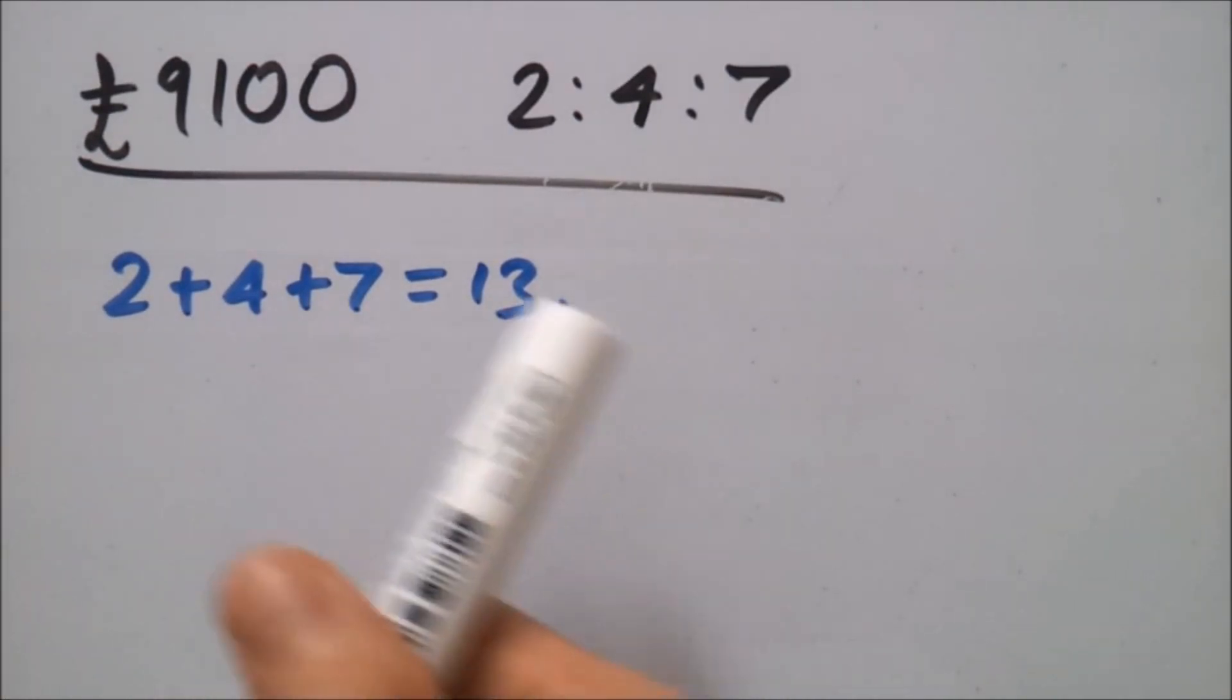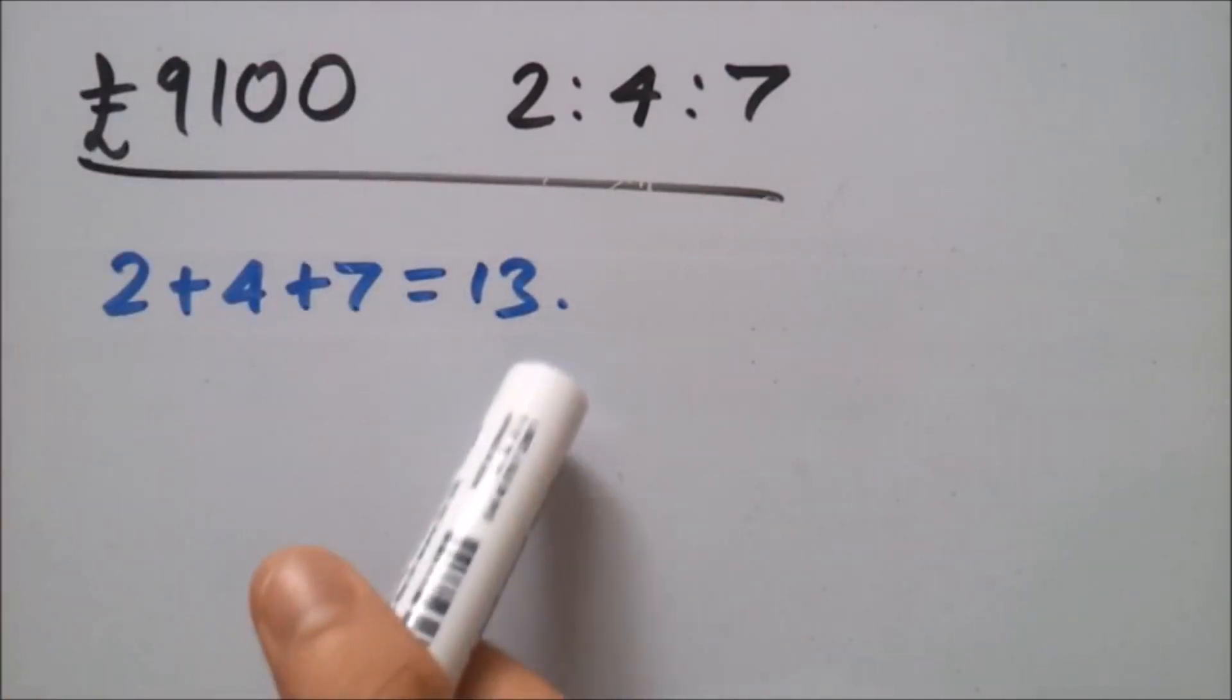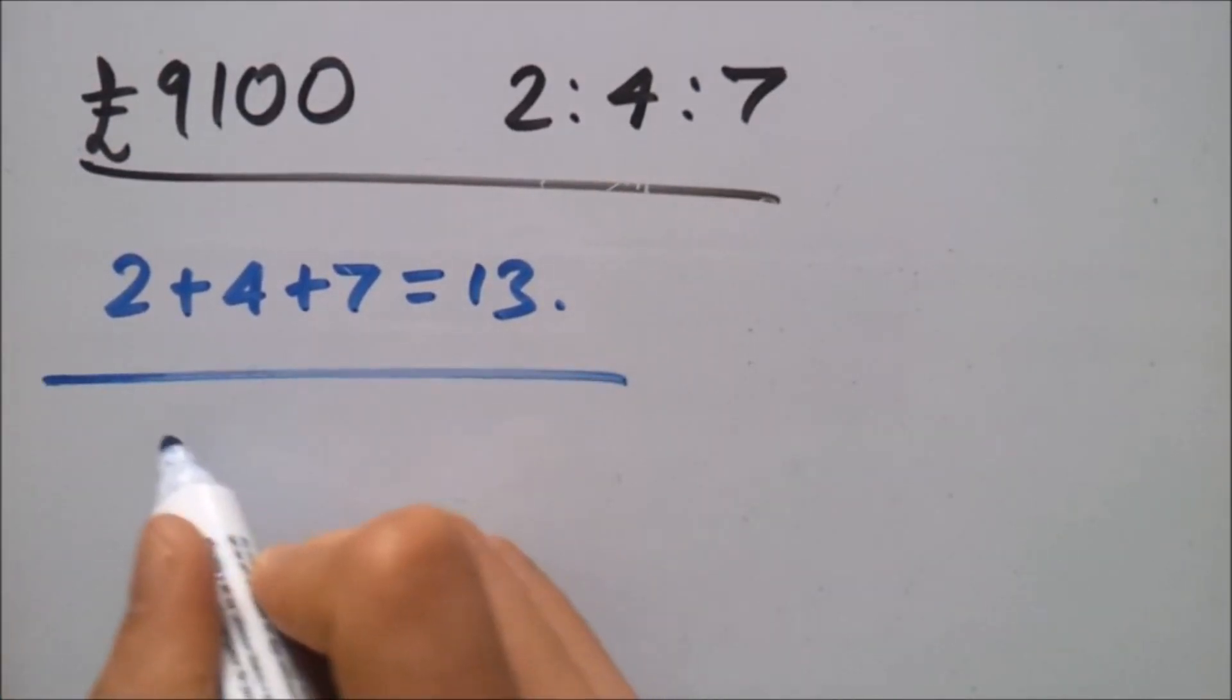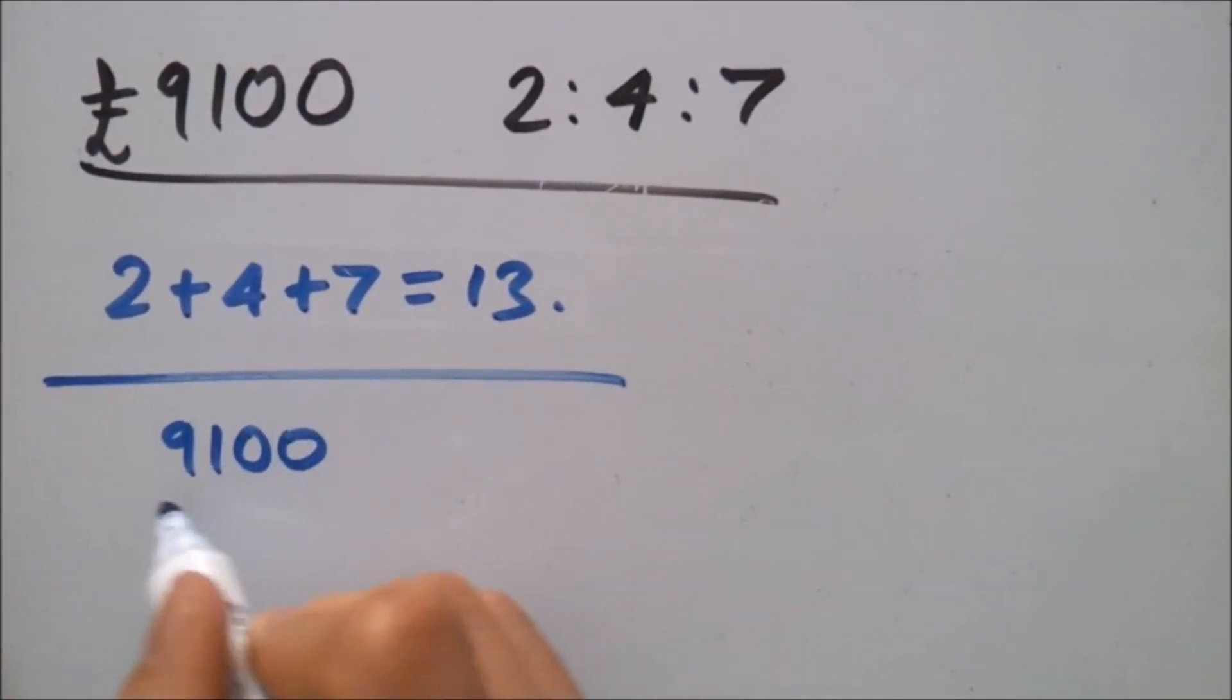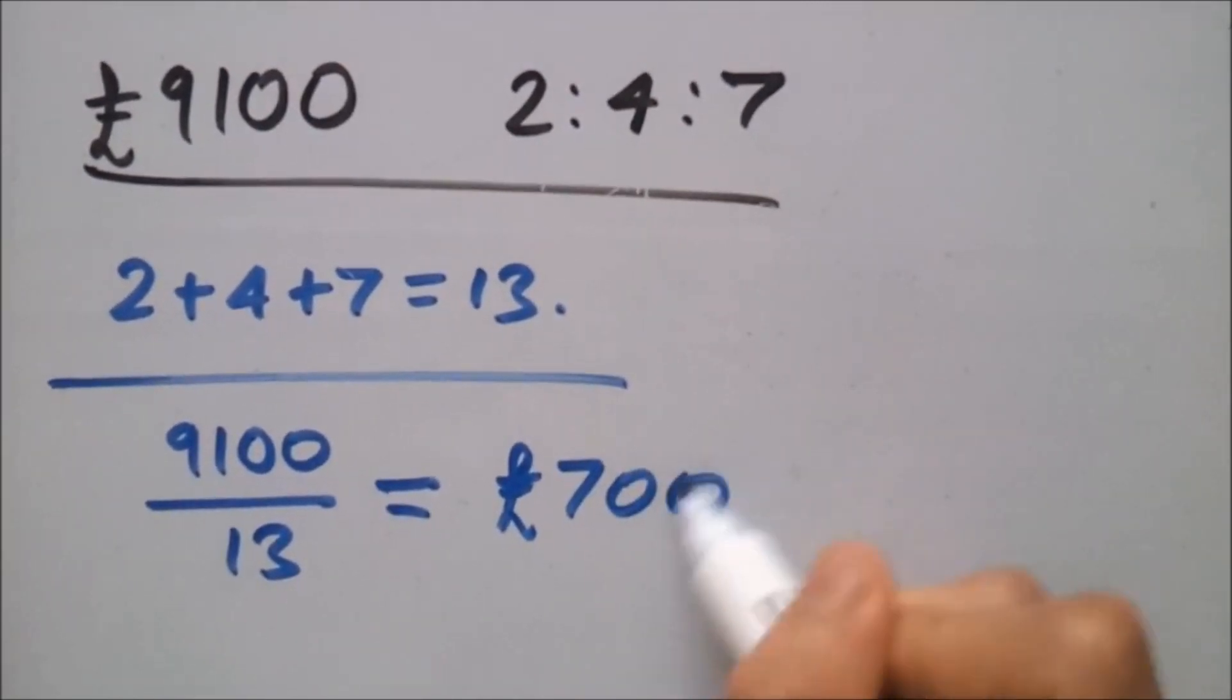So now, we should try and divide this number by the number of parts to find one part. So, 9,100 divided by 13, and if you put this in a calculator, you should find that it equals £700.